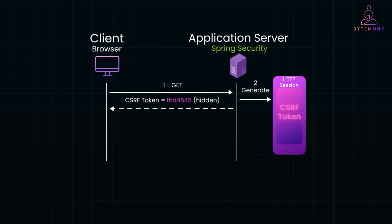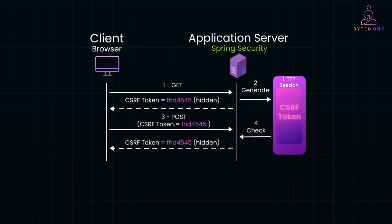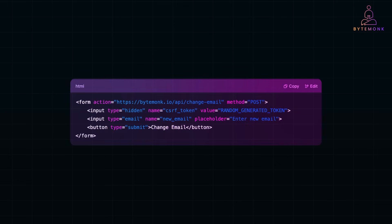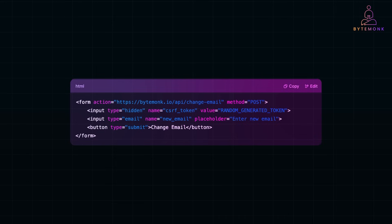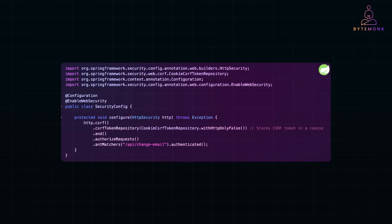The server sends the CSRF token to the client — included in a hidden input field in forms or sent via response headers. The client then submits the form or API request with the CSRF token. The server validates the token: if it is valid, the request is processed; if it is missing or incorrect, the request is rejected. You can secure form submission with a CSRF token in HTML and JavaScript — the token is embedded in the form, ensuring the request cannot be forged. In Spring Boot, you can enable CSRF protection to ensure all POST requests require a CSRF token.